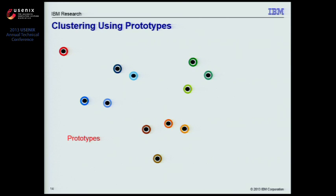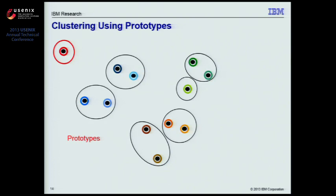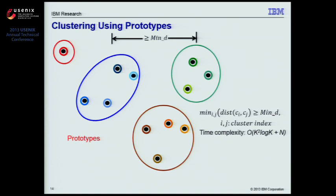The algorithm recursively merges nearby prototypes until the distance between any clusters is larger than some threshold, minD. After forming clusters for the prototypes, all data points associated with a prototype are placed into the same cluster as their respective prototype. The main benefit of this algorithm is that it only operates on the prototypes, and the number of prototypes is usually on the same order as the number of malware families, which is much smaller than the number of input data points. So the overall complexity is close to linear in terms of the input malware samples, much faster than the traditional O(N²) complexity of classic clustering algorithms.